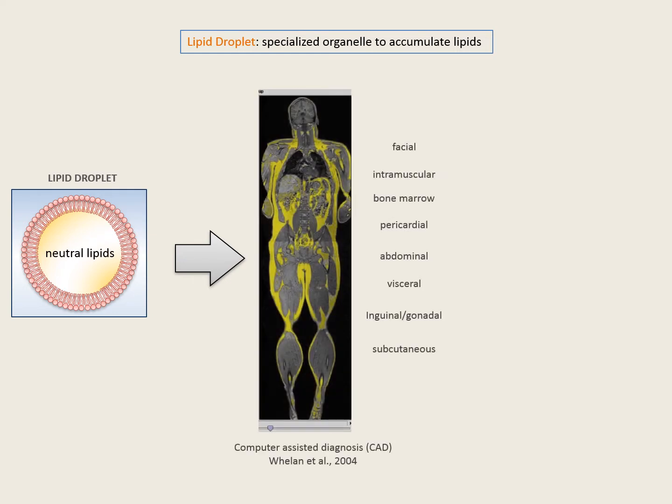We have adipose tissue under the skin, around the major organs of our body, even around the heart. But apart from lipids, we do not have a professional tissue to accumulate other energetic substrates such as glucose or amino acids. In fact, glucose can be converted into fatty acids and stored in the adipose tissue, and that is because lipids are very special sorts of molecules.